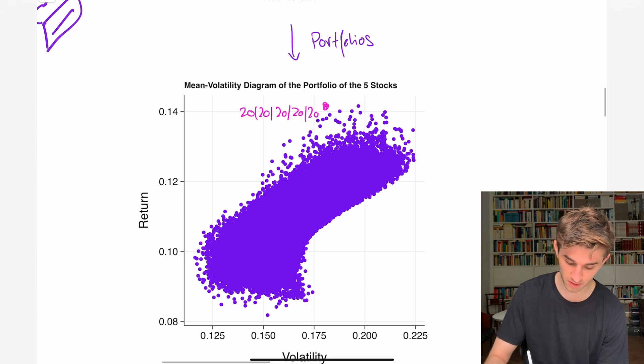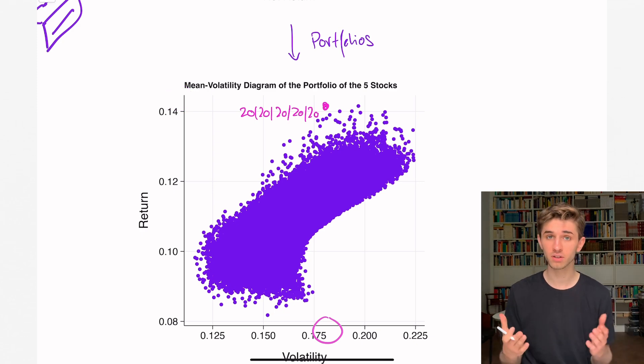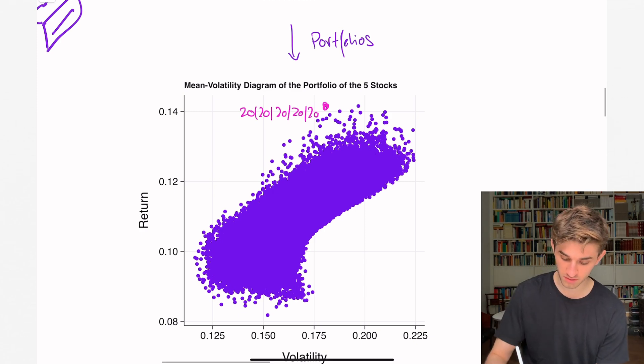In this case, we have a net return of about 0.15 and a volatility of about 0.18. And this volatility of the portfolio depends on the individual volatilities of the stocks and the correlations of the stocks. And what do you see with this diagram?